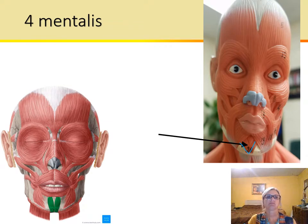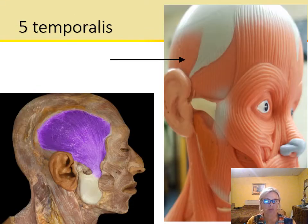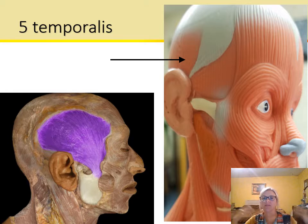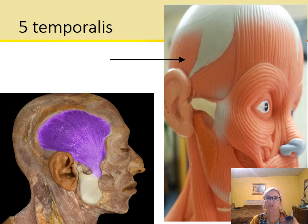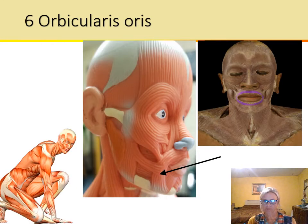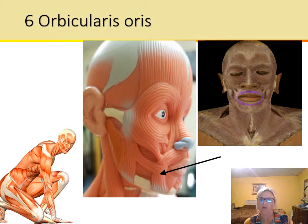The temporalis is located right by the temples of the head. This muscle helps to elevate or lift up the mandible, and it can also retract it — pull it back posteriorly.